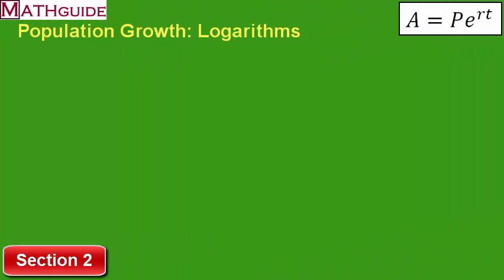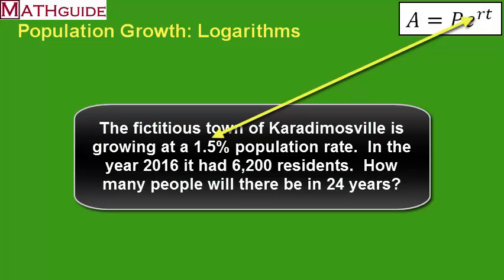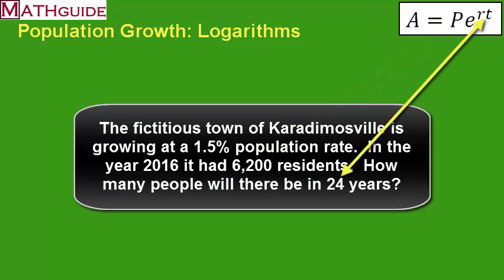Let's tackle our first problem. In the fictitious town of Karadimosville, it's growing at a 1.5% rate. In the year 2016, it had 6,200 residents. How many people will there be in 24 years? In order to conquer this problem, we have to identify the values in the problem and match them up with the variables in our formula. The 1.5% is a rate, that's R. We have 6,200 residents, that's our starting population, P. We have 24 years, that's time.